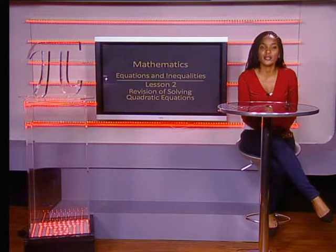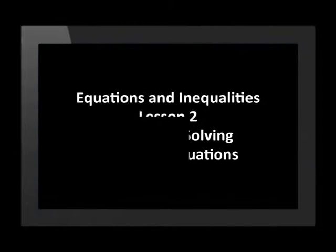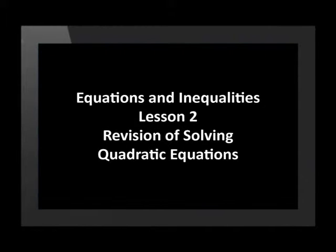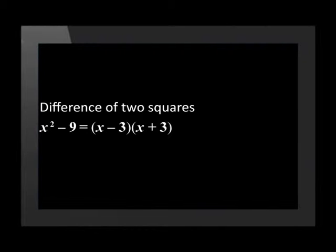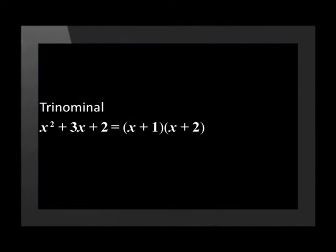Factorization involves the process of making an expression into one term by taking out the highest common factor. In this example, the highest common factor has been taken out of each term, leaving x outside the bracket and x plus 2 inside the brackets. Looking for a difference of two squares — for example, this two-term expression of x squared minus 9 is factorized into two brackets of x minus 3 and x plus 3. A trinomial: using the factors of 2, we open up two brackets in which we have x plus 1 and x plus 2.